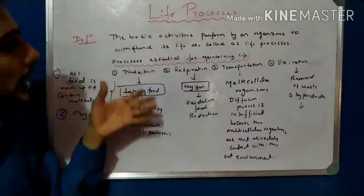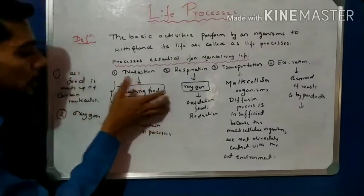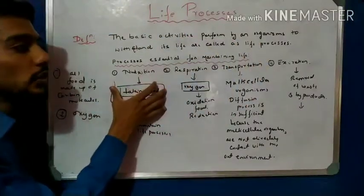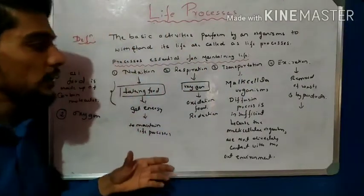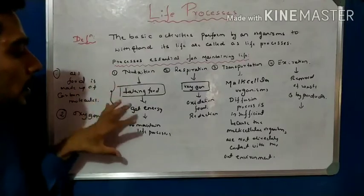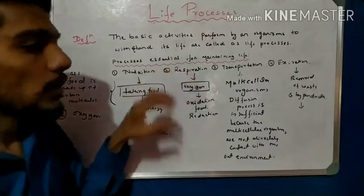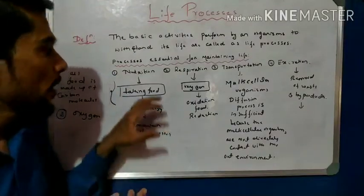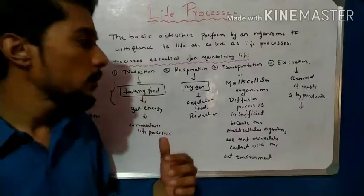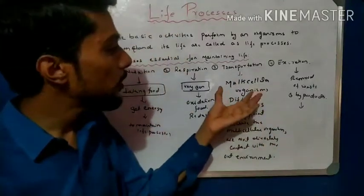These are the basic and essential activities. If any one is disturbed, all others are disturbed. In nutrition, we get energy, which is needed to maintain life processes. The food we take is made up of carbon-based molecules, and oxygen is also required. The raw materials for life processes are carbon-based food and oxygen. In respiration, oxygen is transported and digested food is broken down. Two chemical reactions take place in the body: oxidation and reduction.